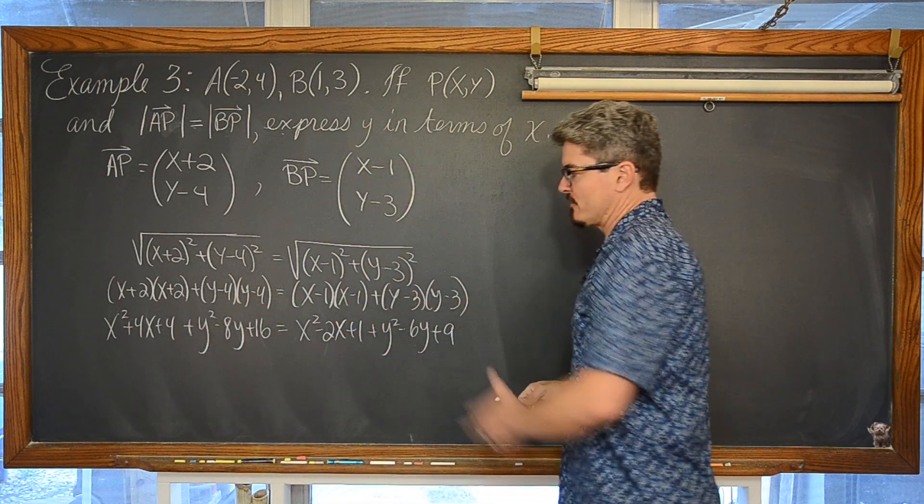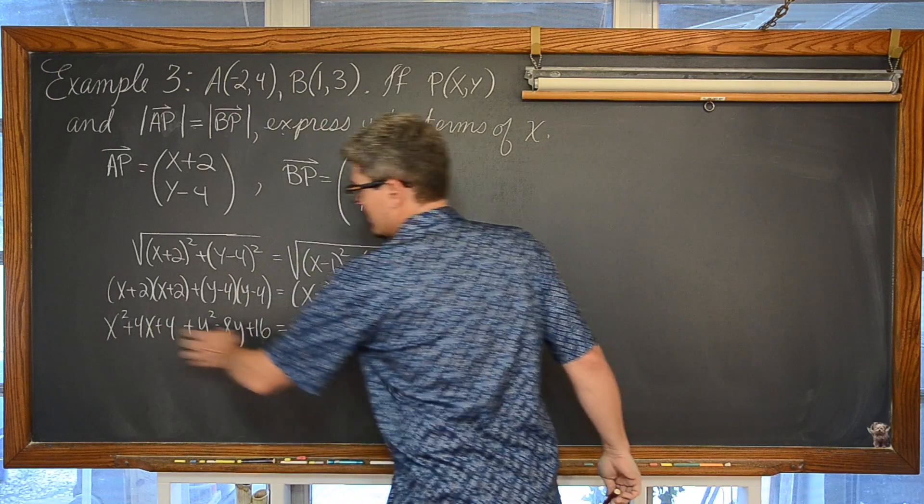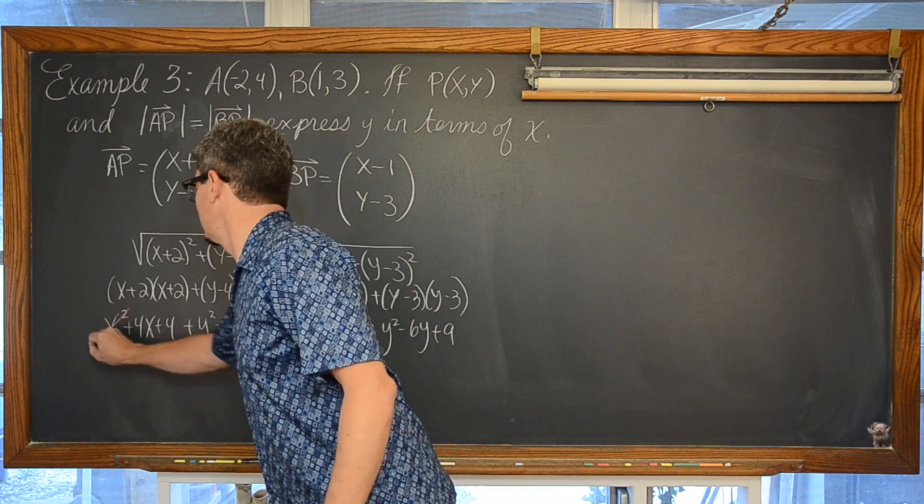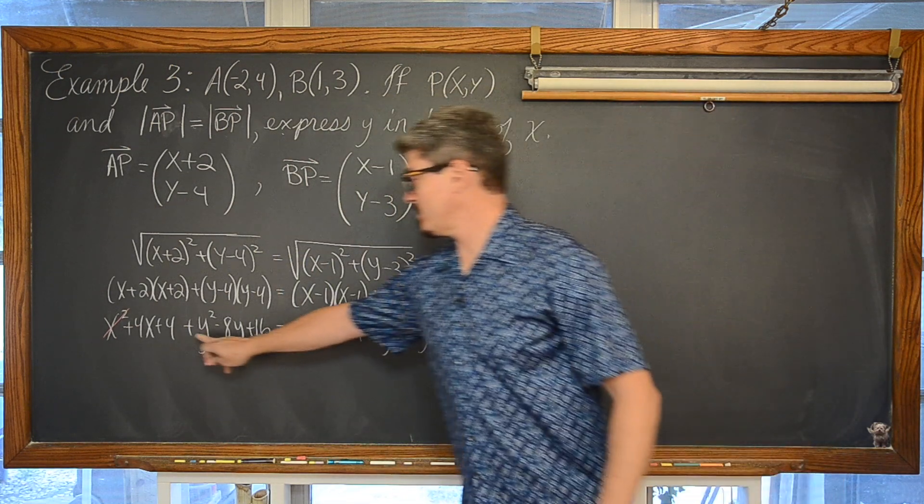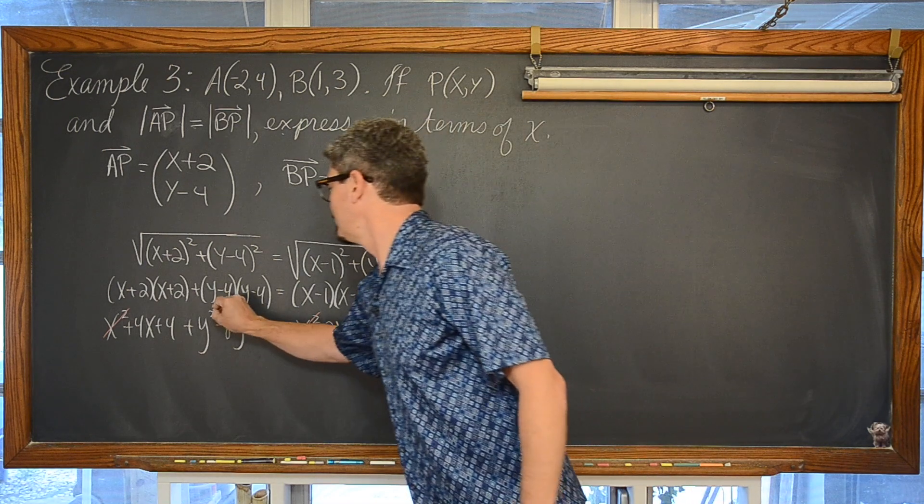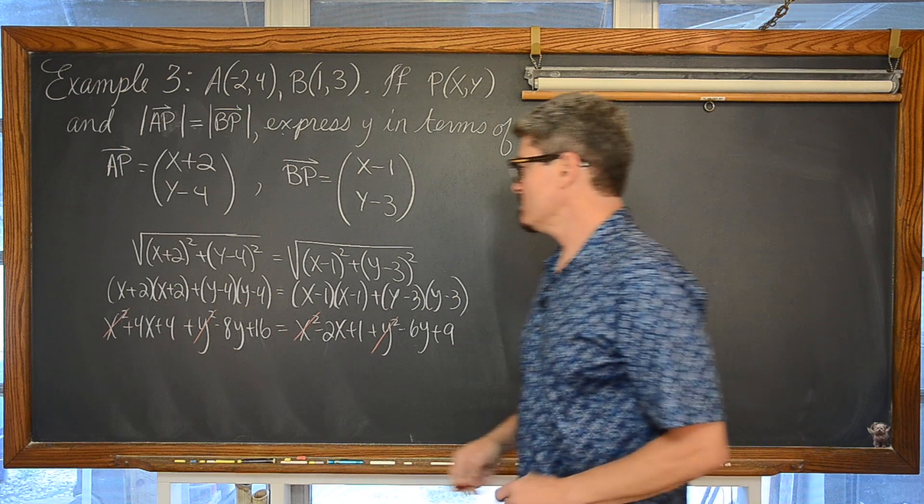Well, as you go to solve for this, of course you have variables on both sides. Each side has a variable of x squared. When you subtract that from both sides, it is going to cancel out. Same with both sides having a y squared, a positive y squared. So when you subtract that from both sides, it is going to cancel out.